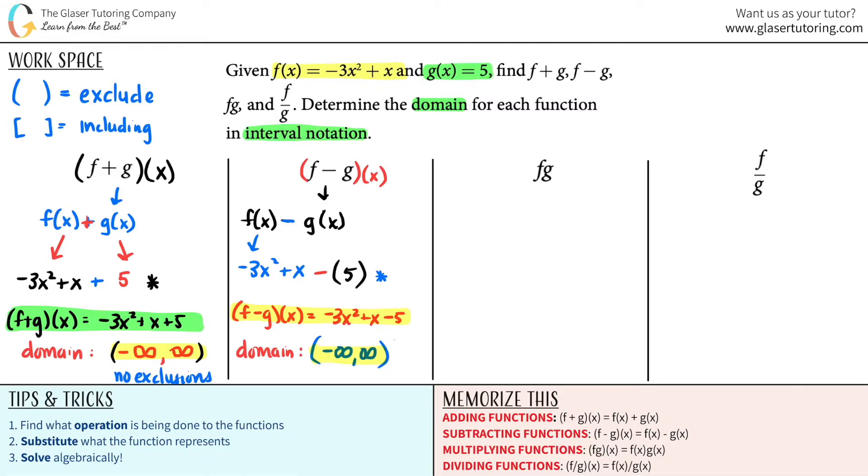Okay, halfway there. This one, f times g. So this is f times g of x, but I like to write it as the other thing because it just makes it look easier. This is just f of x times g of x. I'm multiplying the two functions together.